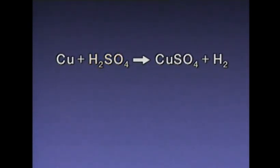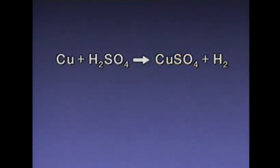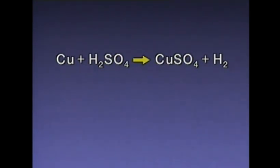Chemical equations must balance. That means whatever is represented on the left side of the equation must also be represented on the right side. The notion of a balanced equation is based on a simple principle: atoms are neither created nor destroyed in a chemical reaction. So what goes in must come out.